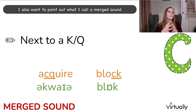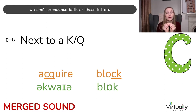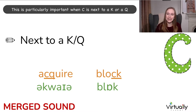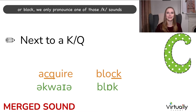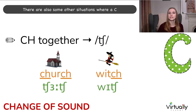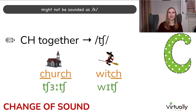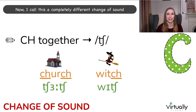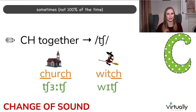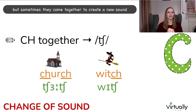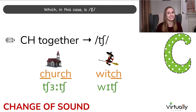I also want to point out what I call a merged sound. When we have two letters next to each other, we don't pronounce both. This is particularly important when C is next to a K or a Q because they both have the same sound. For example: acquire — not 'ack-quire' — or 'block'. We only pronounce one of those K sounds. When C and H are next to each other, sometimes they come together to create a new sound — in this case, CH — for example: church or witch.